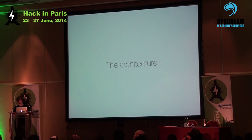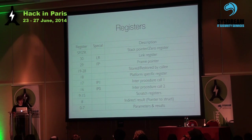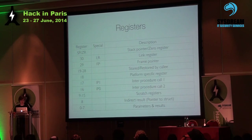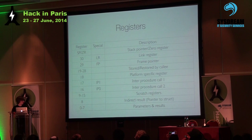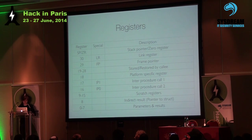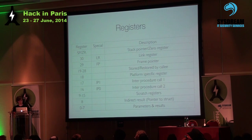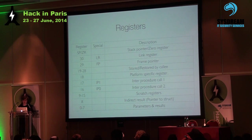If you've ever worked with normal ARM processors, you'll know you had around 16 registers, some of which were banked between different interrupt levels. Now you actually have 30 general purpose registers and also a 31st register, which is either the stack pointer or a zero register depending on your context. The first eight registers are for parameters and results in your function calls and are never banked between calls. The eighth is if you return a pointer, then you have some scratch registers and inter-procedure call registers. Registers 30 and 29 — the frame pointer and the link register — are what you'll be confronted with most when writing exploits.